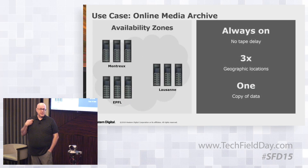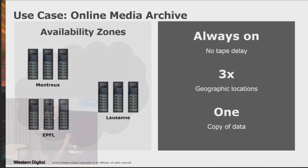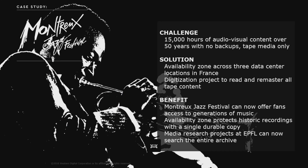Going back to this example to close out: availability zones. This particular one is an example of a customer we have in Europe. They took tape archives from 49 years of performances and moved them to a three-site geo located in three locations in France. Now they have one copy of data, and this use case is on our website. You can now go to the Montreux Jazz Festival site and stream performances over the years — my favorite happens to be David Bowie from around 2000–2001, one of the last times he was recorded at Montreux.